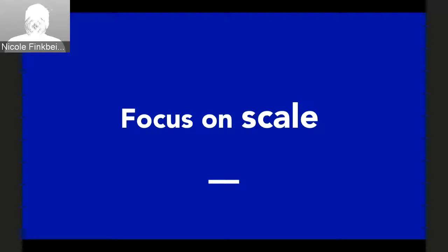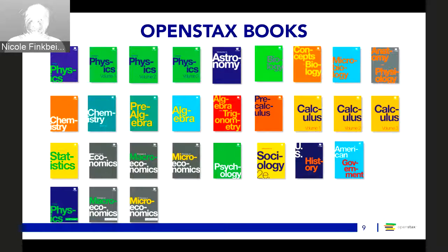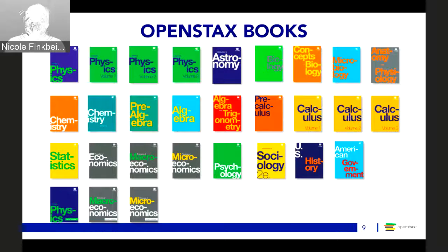We also learned that we really need to focus on scale. The big question I continue to ask when working with colleges on their OER initiative is: how many students will be impacted? Looking at the OpenStax library, our books all meet the freshman core. Two main criteria go into which books we publish: number one, how many students are taking the course in the U.S. — for example, there are a million students a year taking U.S. history and a million taking psychology.